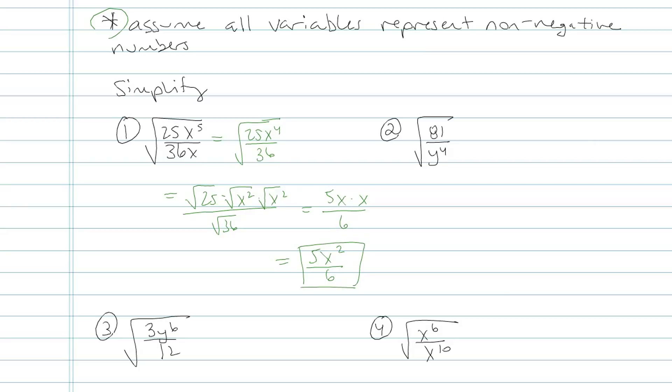Let's try another one, square root of 81 over y to the fourth. Now that fraction can't be simplified at all, so I'm going to go ahead and split it into square root of the top on top of square root of the bottom.